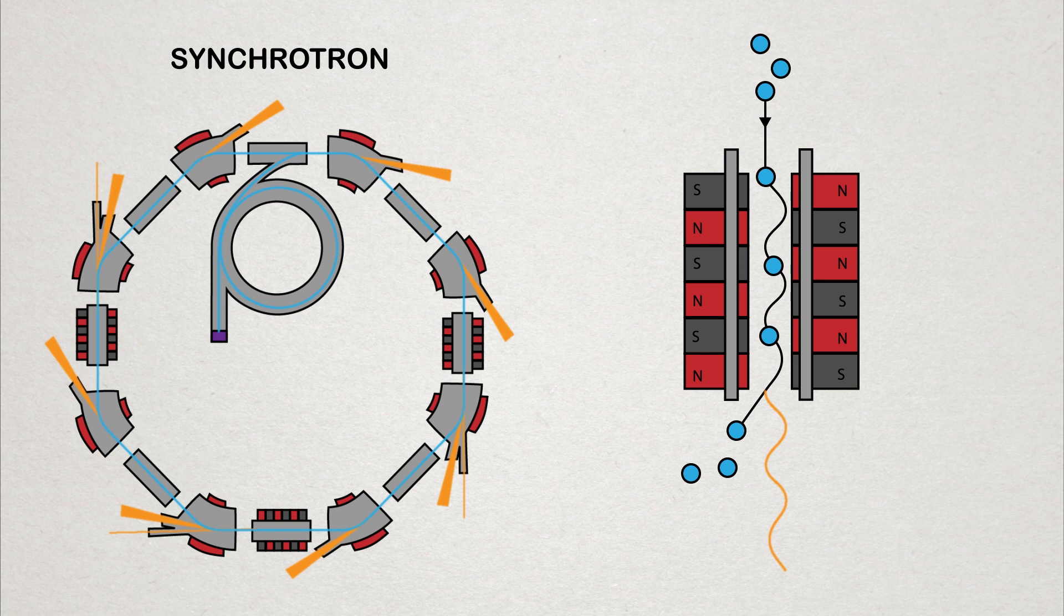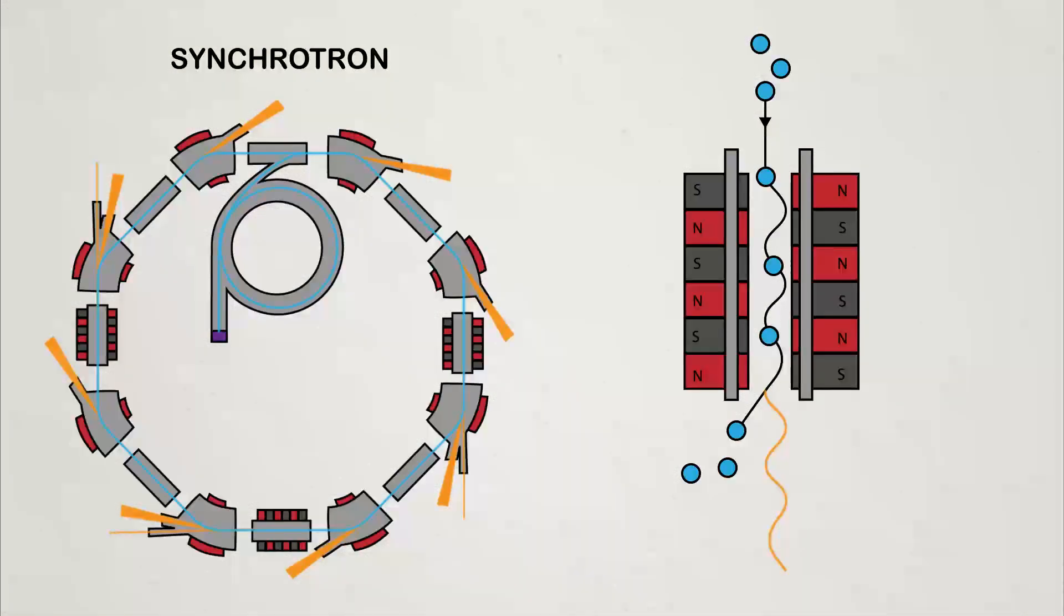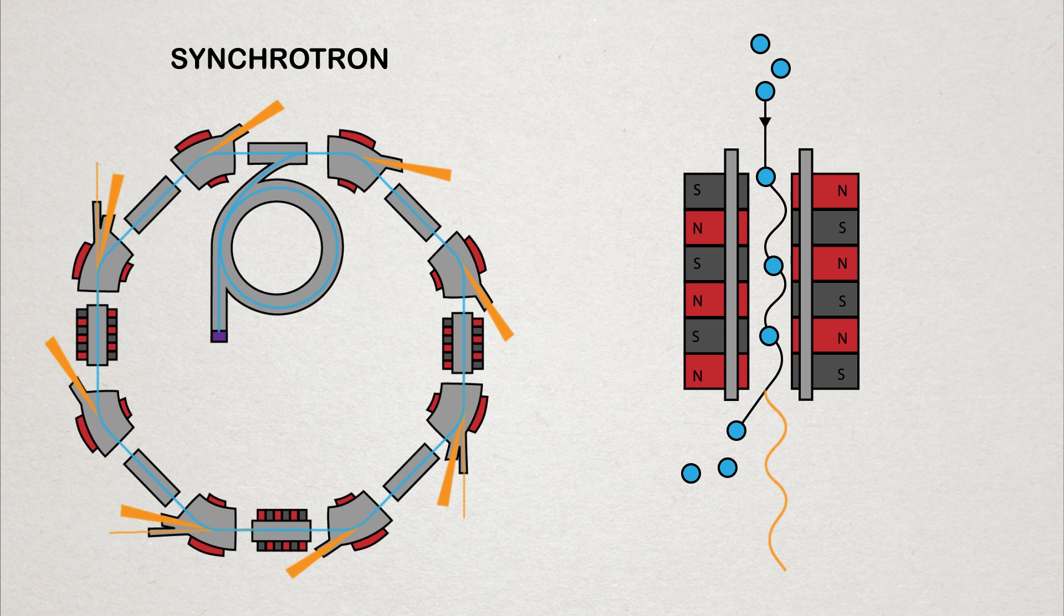They needed to use these X-rays from the synchrotron because in order to perform the measurement, they needed a light source with a very specific energy.